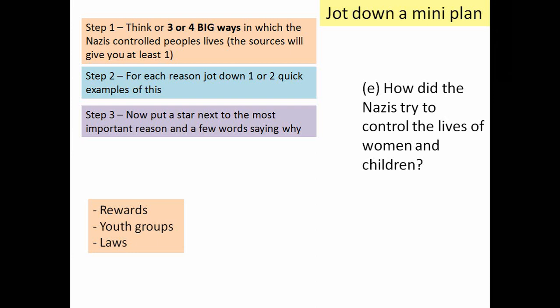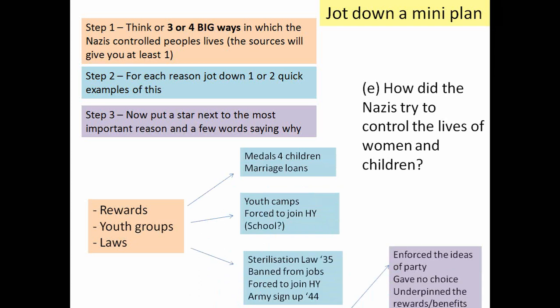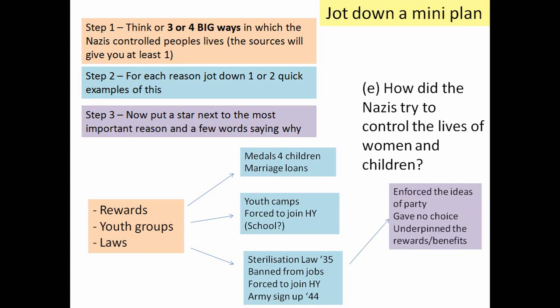When you did the question about the lives of women and children, your plan looked something like this: three big areas — rewards, youth groups, and laws — with some quick examples, and then the decision that laws were probably the most important way they controlled the lives of women and children. It's very straightforward, and exactly what you need to do for these 2c and 3c questions.